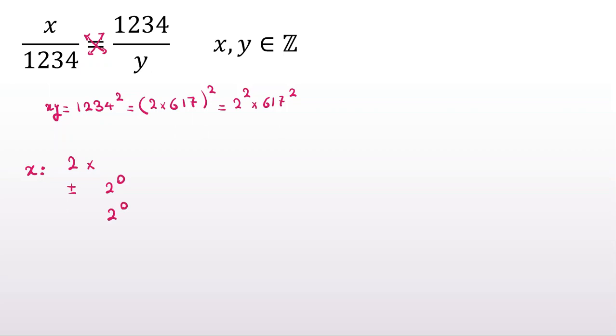For power of 2, 2 to the 0, we can select for x or 2 to the 1 or 2 to the 2. Three cases. For 617 to the 0, 617 to the 1, or 617 squared.